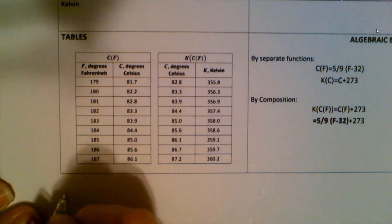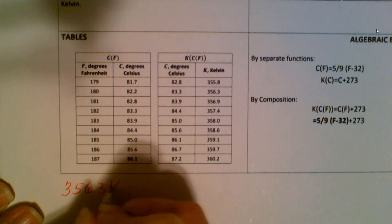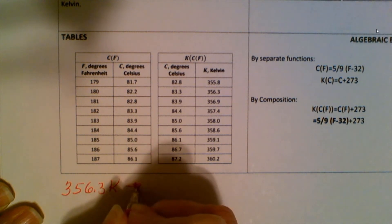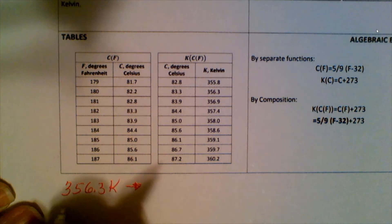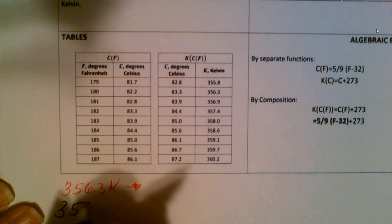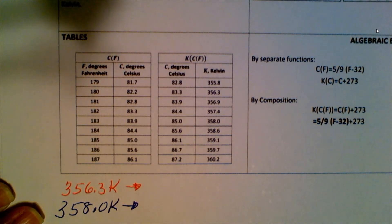Basically, she's got 356.3 Kelvin and needs to backtrack that value. She also was asked to double-check 358.0 Kelvin and backtrack that as well.